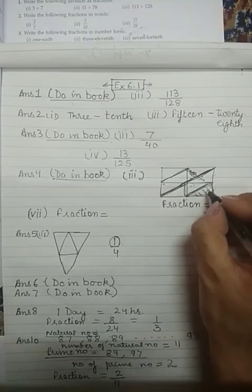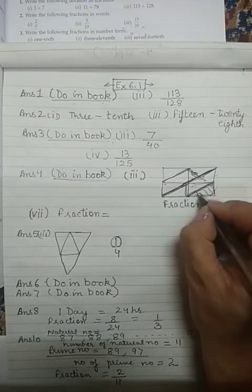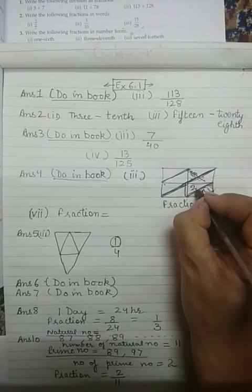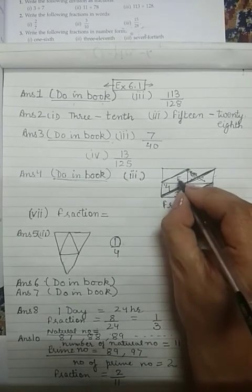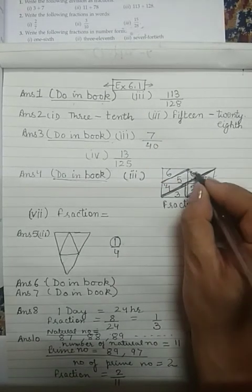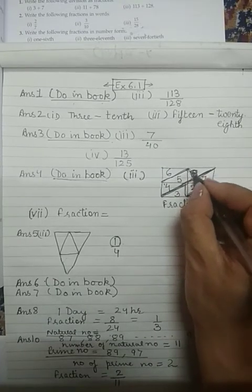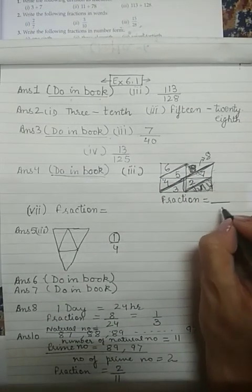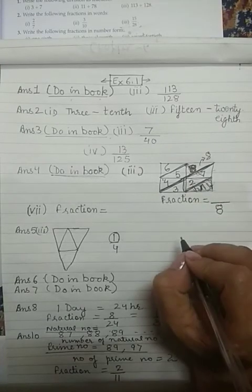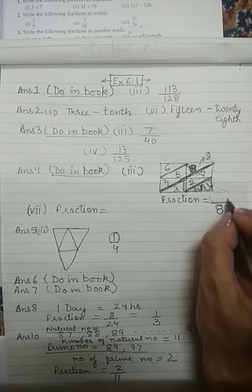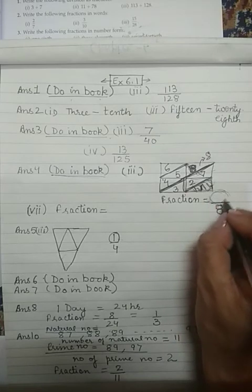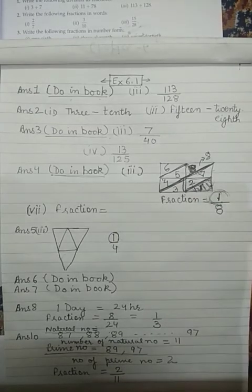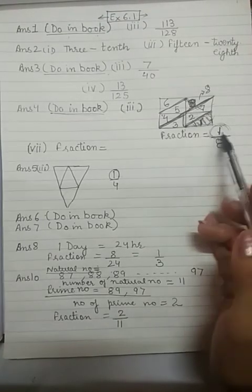Now let us count the triangles. The shaded portion is shaped like a triangle. Counting the triangles: first, second, third, fourth, fifth, sixth, seventh, eighth — there are 8 triangles in total. How do we write the fraction? Write the total in the denominator. Whatever shaded portion is there comes in the numerator. How many shaded portions are there? Only one. So the answer is 1/8.